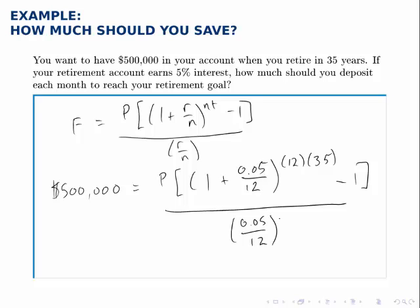To solve for P, we'll figure out what everything in brackets equals and simplify that down. Divide that by 0.05 divided by 12, and then we'll have P times everything else as a single number equals 500,000. Then we'll divide 500,000 by that single number to get P, the regular deposit amount.